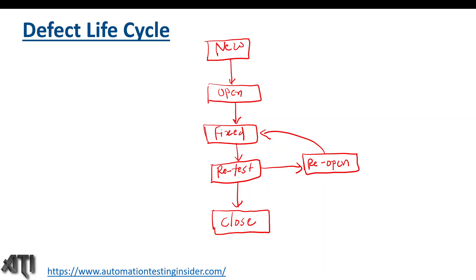Apart from these, there are other statuses as well. If the developer does not accept the defect, they may reject it — the status becomes 'Rejected'. We then need to assess whether it is really a valid defect. If we find it is valid, we showcase the steps to reproduce and it gets reassigned to a developer as 'Open' again. If they still find it is not a valid defect, it remains 'Rejected'.